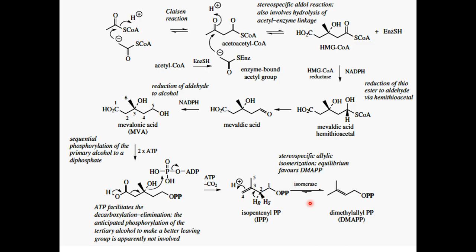Isopentenyl pyrophosphate undergoes allylic isomerization to form dimethylallyl pyrophosphate (DMAPP). These are the building blocks of terpenoids. They may also be formed by another pathway called the methylerythritol phosphate (MEP) pathway; however, this is beyond the scope of this lecture.